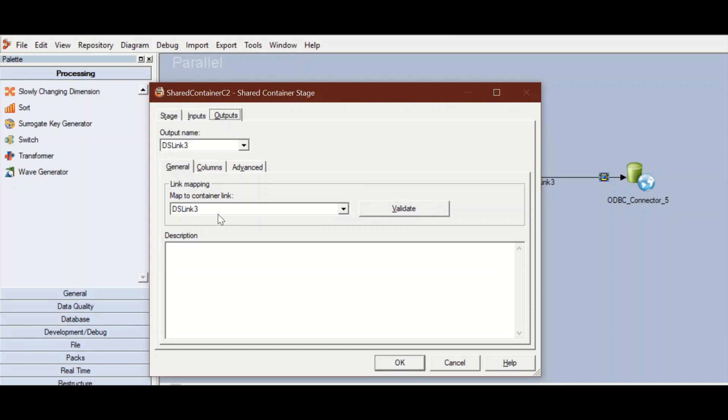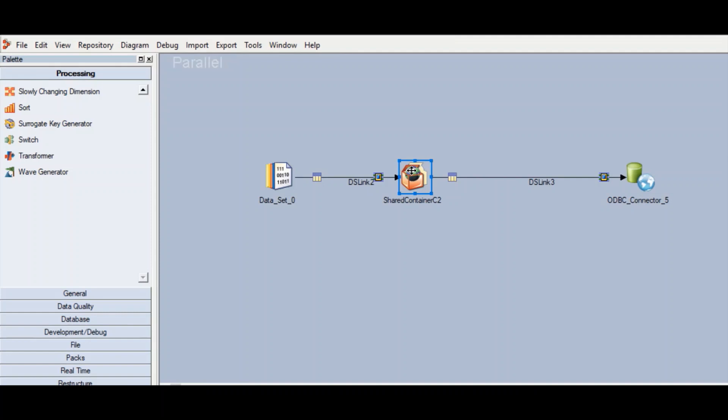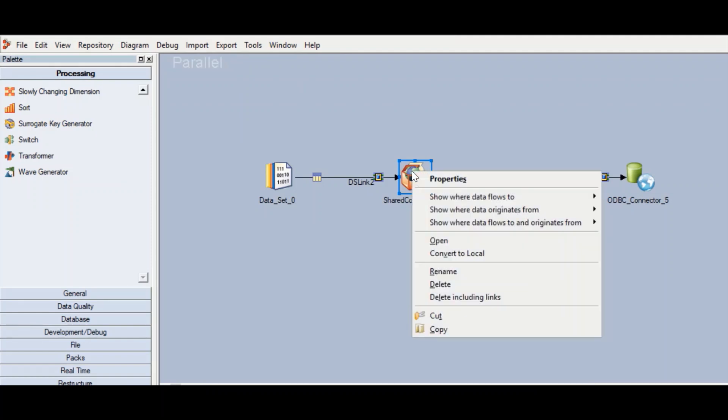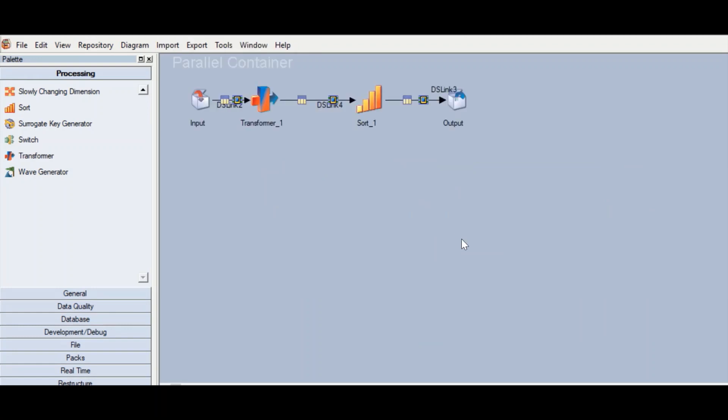Similarly for the output step, you can see the link it is mapped to and you can validate the link as well. Now if you right-click here and go to Open, then it will take you to the actual code that has been converted to the shared container.